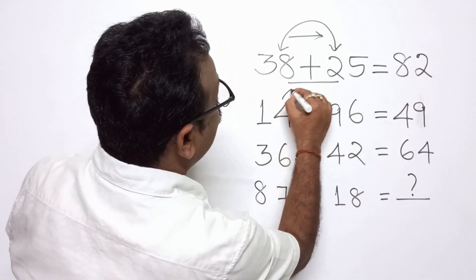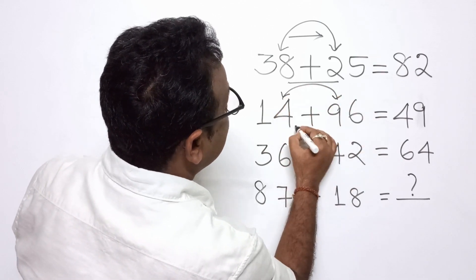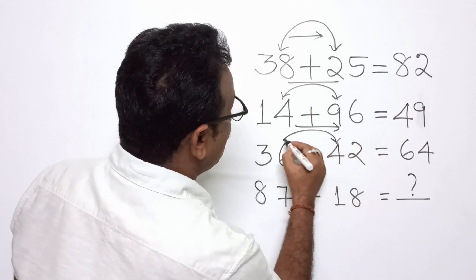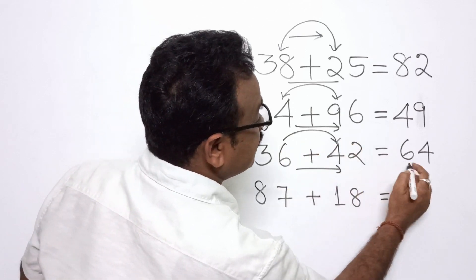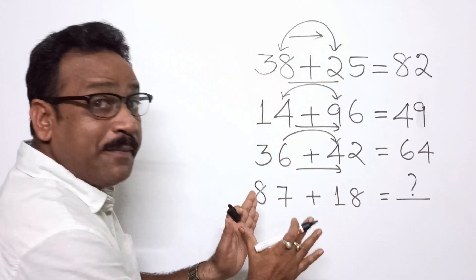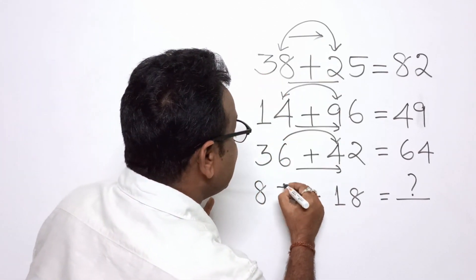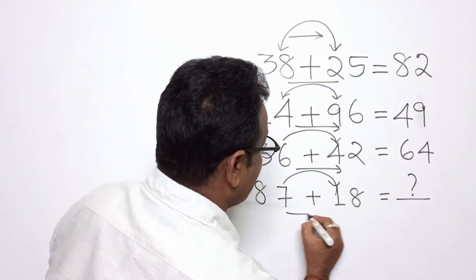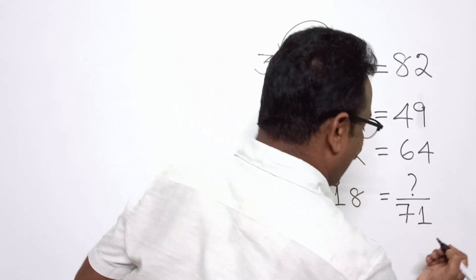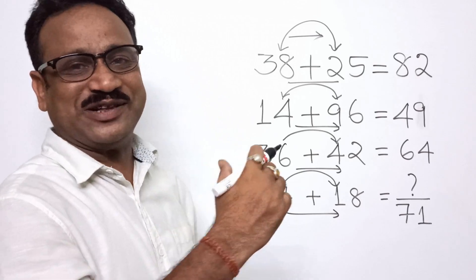Here we have taken 49, left to right 49. Here we have taken 64, so left to right 64. So similarly, following the same pattern, we will get 71 from left to right. Answer is 71. I hope that you have enjoyed it.